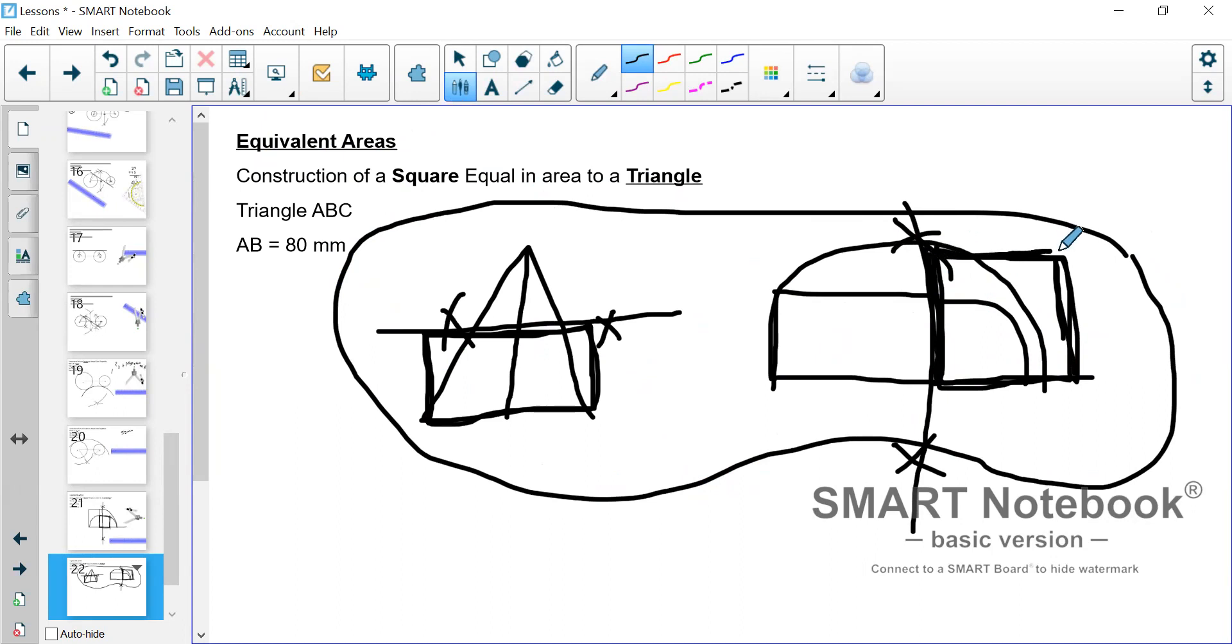Because we want to get this square here from this triangle. So, we're starting with this triangle, and we're ending up with this square. So, if we have this triangle, and we construct a rectangle equal in area to this triangle, and then we use this rectangle, and we change it to a square. Do you think that square would be equal to the triangle?